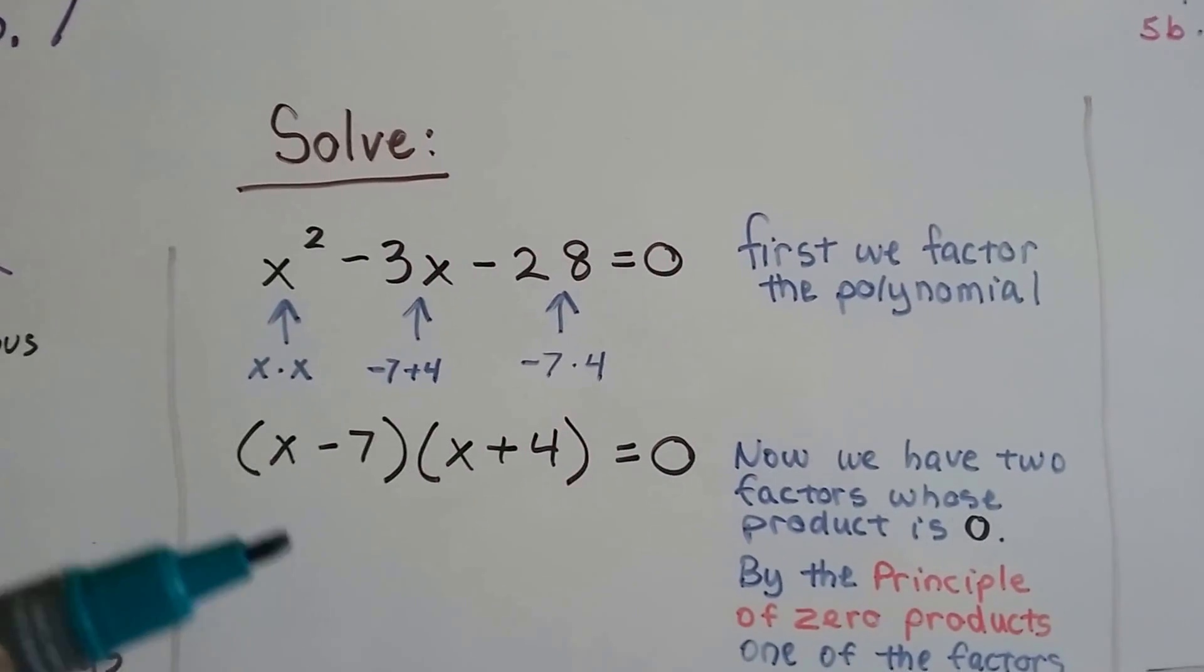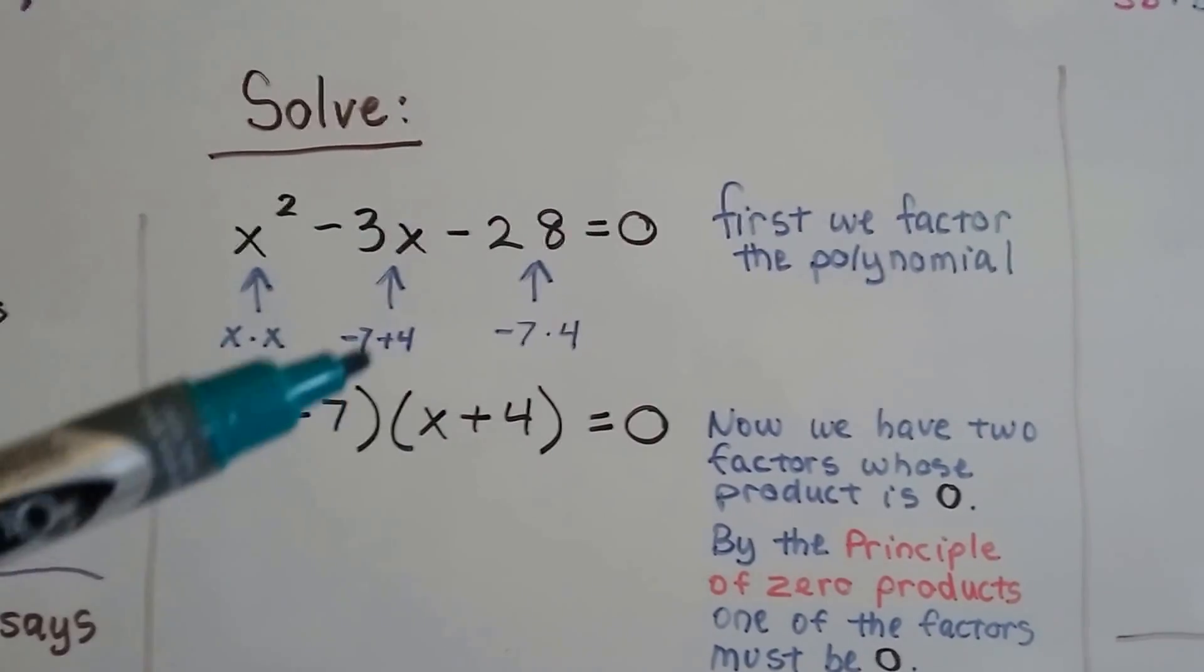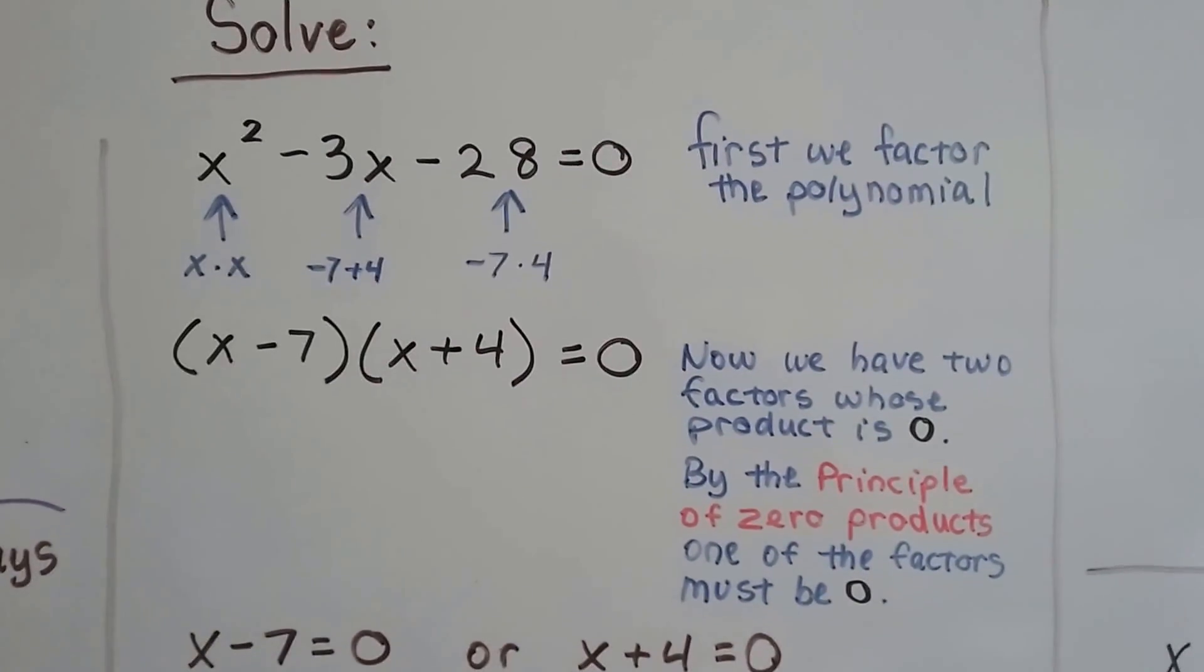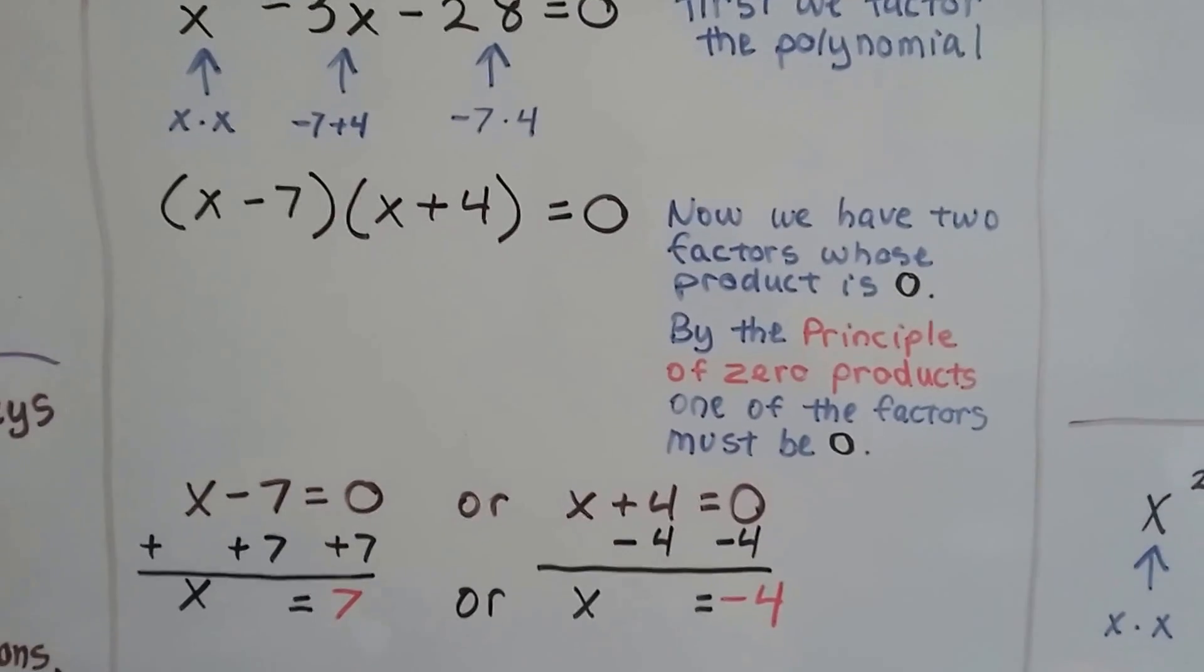We put them into parentheses. An x here and the other x there. And then we've got our -7 and our +4. Now we have two factors whose product is zero. And by the principle of zero products, one of the factors must be zero.